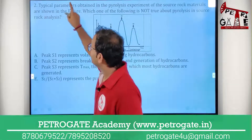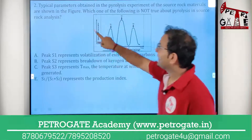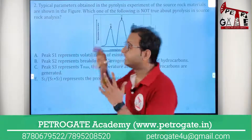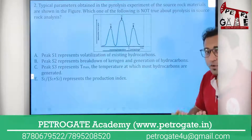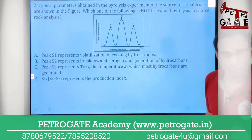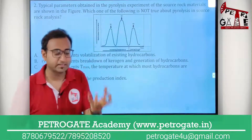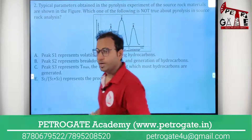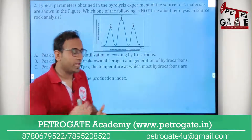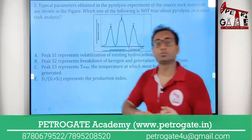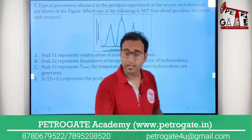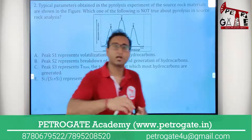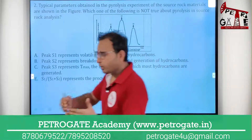Question number two from GATE 2019 deals with typical parameters obtained in a pyrolysis experiment. In this method, I am doing an experiment on source rock material. The source rock contains organic material like kerogen. I take a sample, place it in the pyrolysis equipment, and get parameters — such as the potential of this rock to generate hydrocarbon and whether it will generate mostly oil or gas.